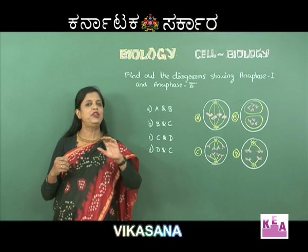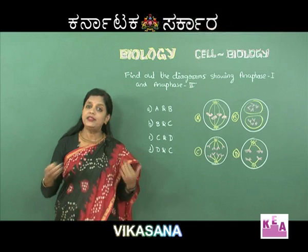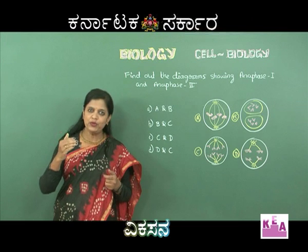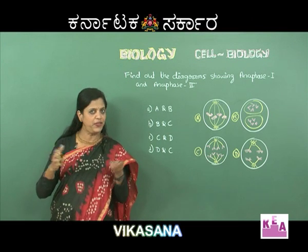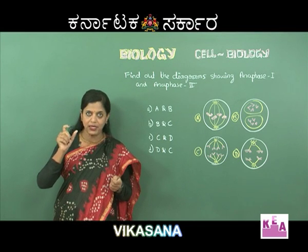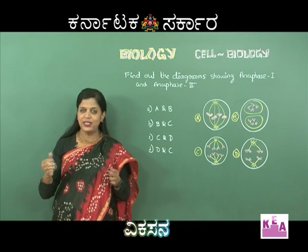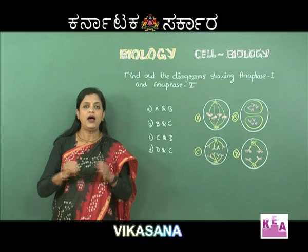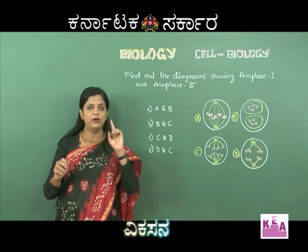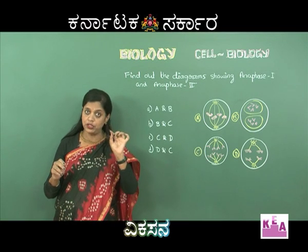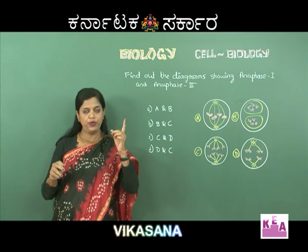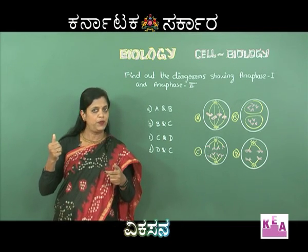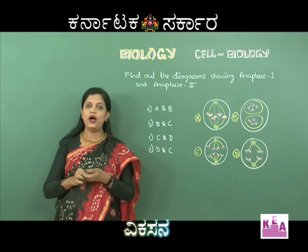Meiosis is the Reductional Cell Division. The chromosome number of the mother cell is reduced to half in the daughter cells - if the mother cell has 46 chromosomes, daughter cells get only 23 chromosomes. There are four stages of mitosis: Prophase, Metaphase, Anaphase, Telophase. Meiosis has Meiosis I and Meiosis II. Meiosis I: Prophase I, Metaphase I, Anaphase I, Telophase I. Meiosis II is a simple mitotic division: Prophase II, Metaphase II, Anaphase II, Telophase II.